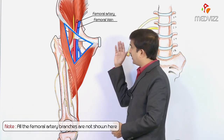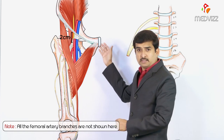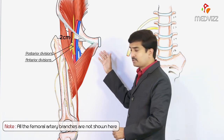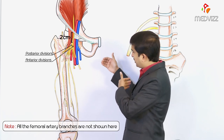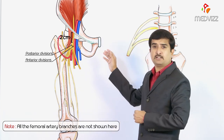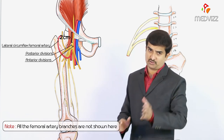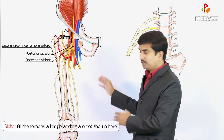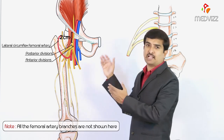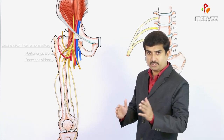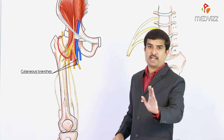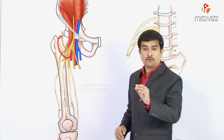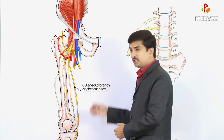About two centimeters below the inguinal ligament, the femoral nerve splits into anterior and posterior divisions within the femoral triangle. These two divisions are separated by the lateral circumflex femoral artery. The anterior division gives off two cutaneous branches and one muscular branch, while the posterior division gives off one cutaneous branch — the saphenous nerve — and four muscular branches.